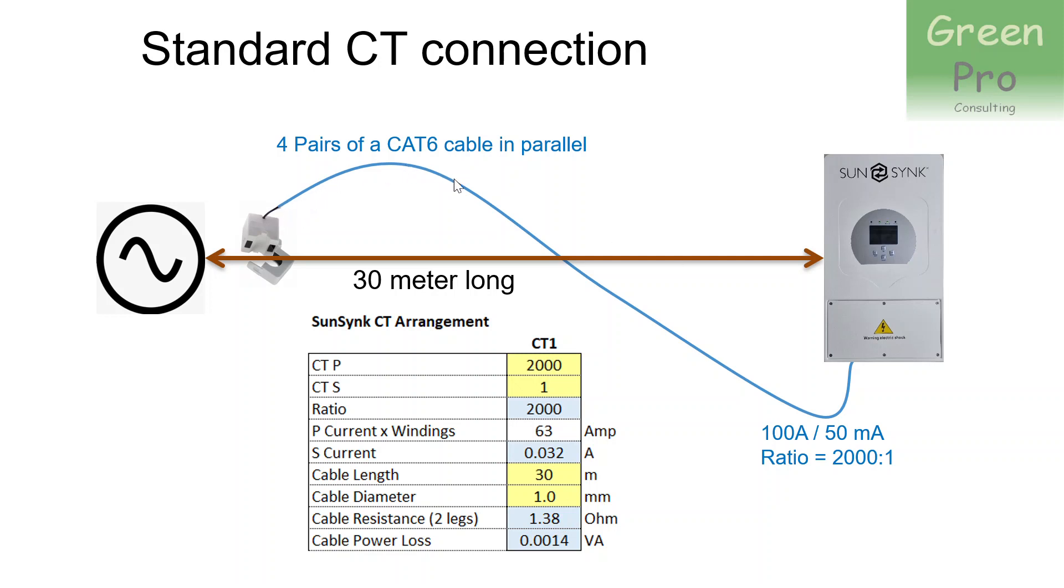So what we did is we extended the cable using a CAT6 cable. We used all four pairs, which would then give you four twisted pairs with a total cable diameter of one square millimeter. The burden that we put onto the transformer was 0.0014 VA or 1.4 milli VA, and I would assume that this transformer is rated a lot higher than that. So I don't think burden was our issue. I think our issue was that the secondary current is simply extremely small, and over a distance of 30 meters you simply get too much distortion.